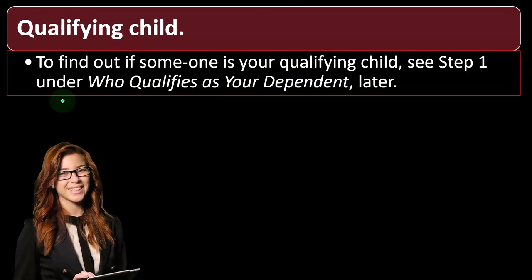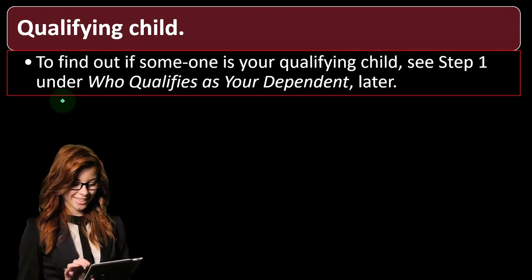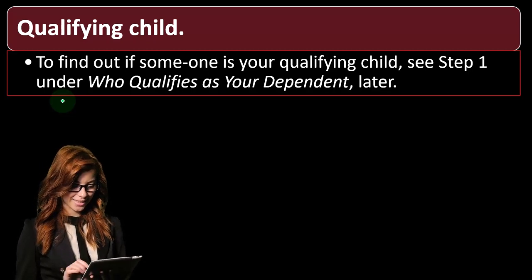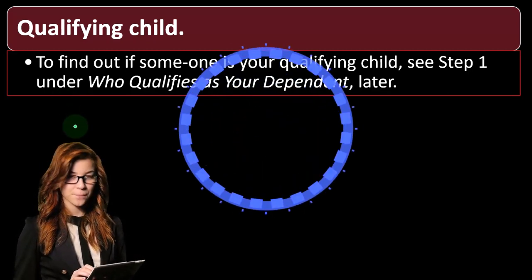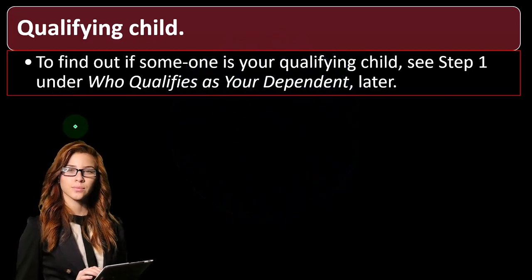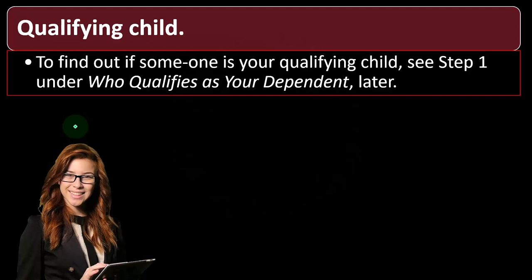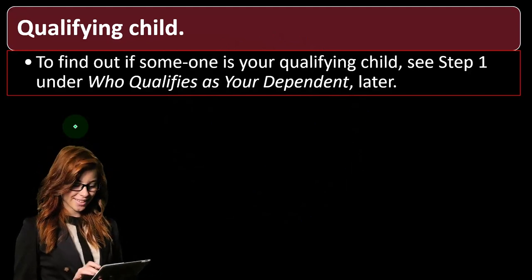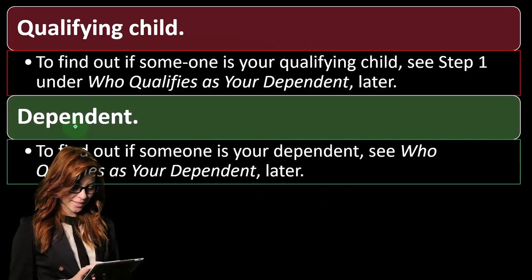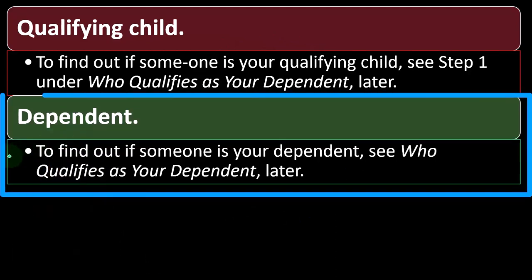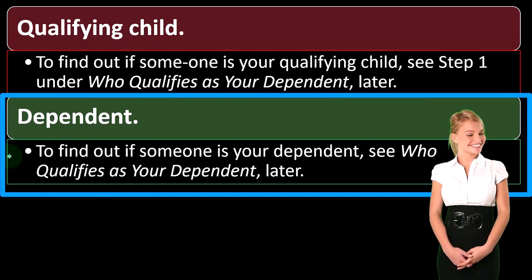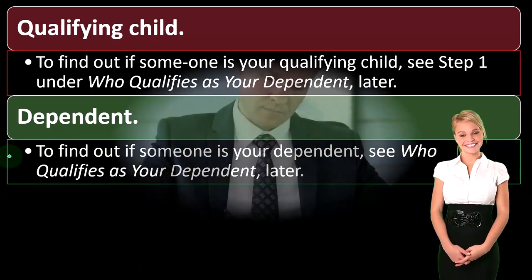Qualifying child is something that came up in a prior presentation. When thinking mainly about head of household requirements, to find out if someone is a qualifying child you can see step one under 'Who Qualifies as Your Dependent.' We will get into dependents later — note that some of this is intertwined; we're looking at filing statuses, but dependents may be involved in determining those statuses.